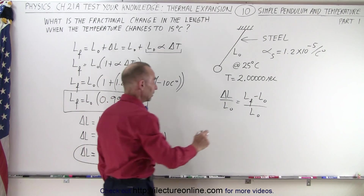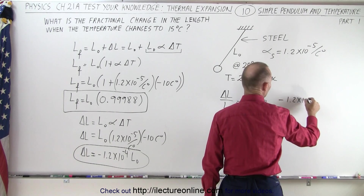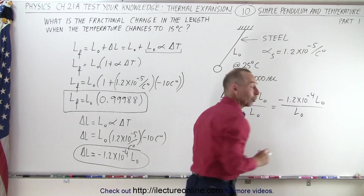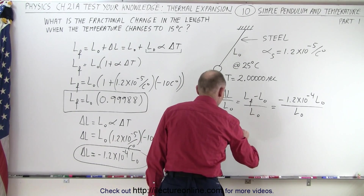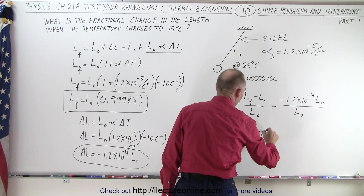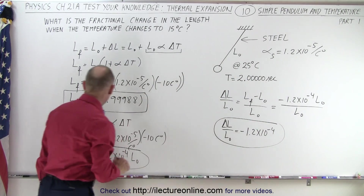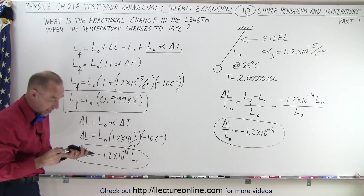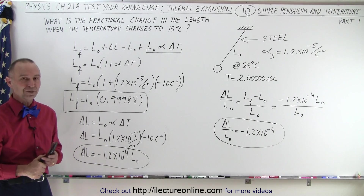Now we can plug that in. The fractional change in the length will be negative 1.2 times 10 to the minus 4 times L_initial divided by L_initial. The L_initials cancel, and the fractional change in the length relative to the original length is going to be negative 1.2 times 10 to the minus 4. And there you have it — the fractional change in the length and the relationship between final length and initial length. We're all set up for part 2 on the next video. Thank you.